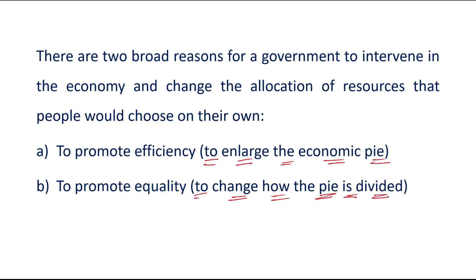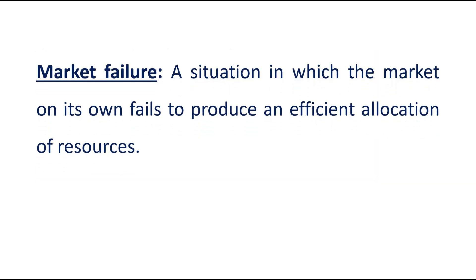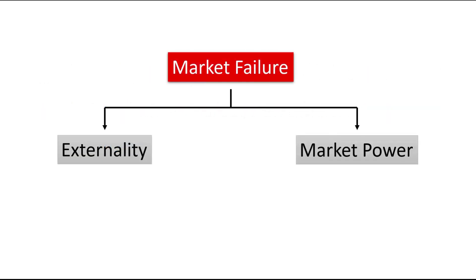Let's first consider the goal of efficiency. Economists use the term market failure to refer to a situation in which the market on its own fails to produce an efficient allocation of resources. There can be two possible causes of market failure: the first is externality and the other is market power.